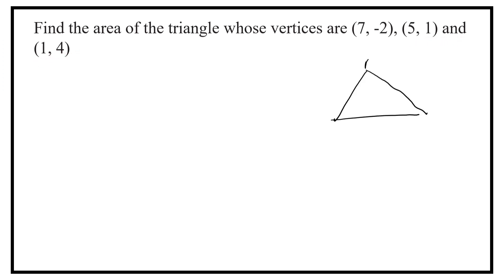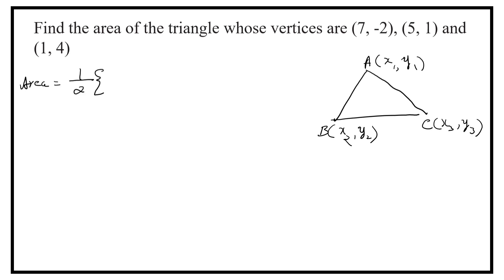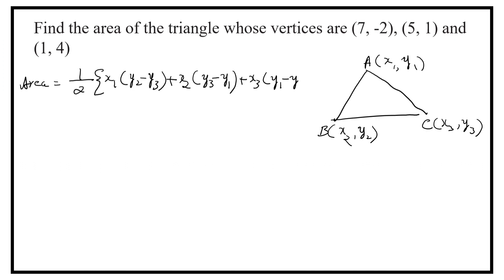Let ABC be the triangle whose vertices are x1, y1; x2, y2; and x3, y3. So, area of the triangle is equal to half into x1(y2 minus y3) plus x2(y3 minus y1) plus x3(y1 minus y2).